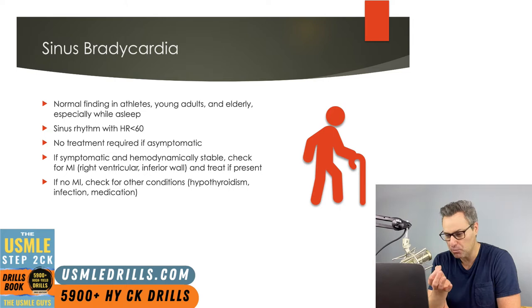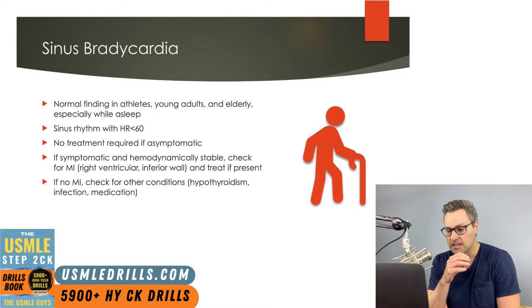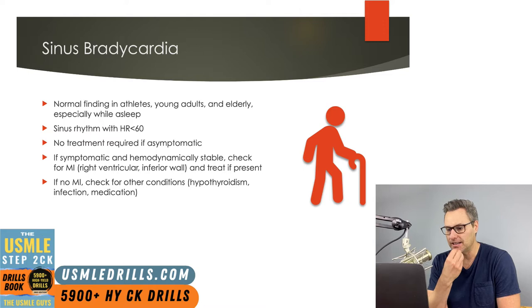If they are hemodynamically stable but have symptoms, then we would check for signs of an MI. An inferior wall MI could affect the right ventricle and be a potential cause of the symptomatic bradycardia. To evaluate, we do an ECG, look for all the signs, and check troponins.